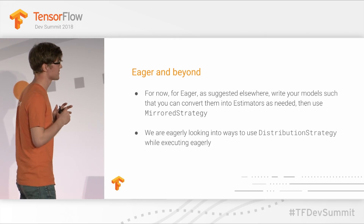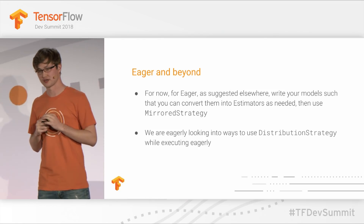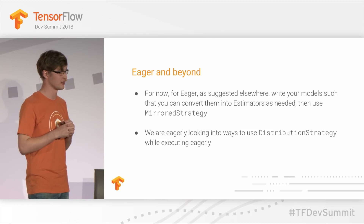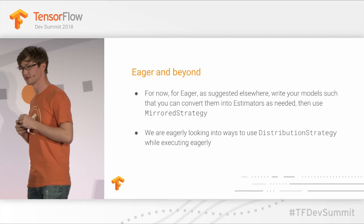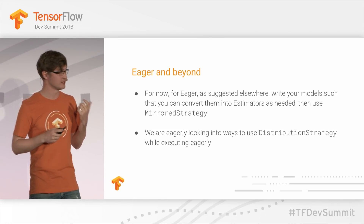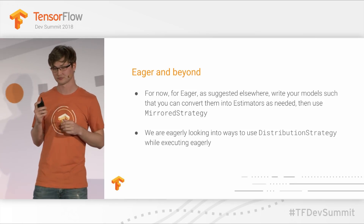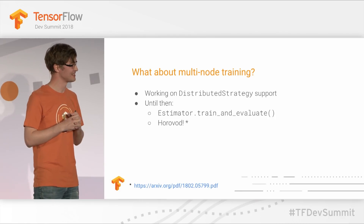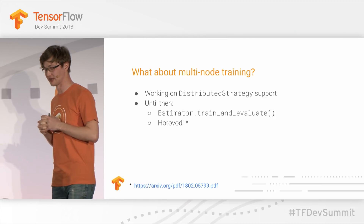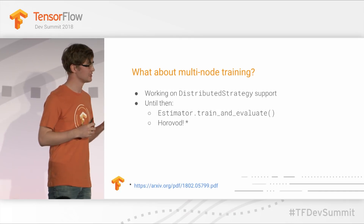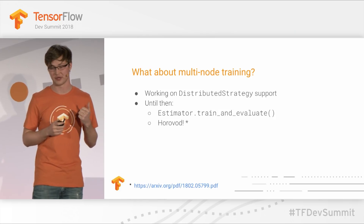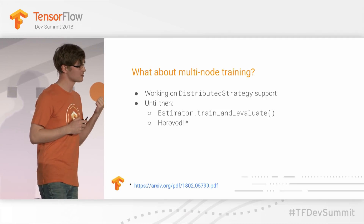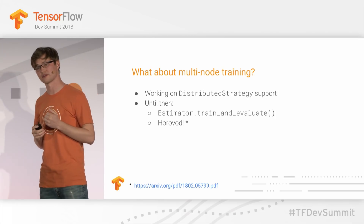Distribution Strategy also works with eager mode, though we're still fine-tuning the performance. It's a very general API that in the future will support many use cases — it's not tied to Estimator, and we're looking into better APIs built on top of it. Soon, we intend to support many kinds of distributed training: synchronous, asynchronous, multi-node, and model parallelism. Until then, for multi-node solutions, please continue using Estimator's train and evaluate, or try Horovod — an outstanding community project that also offers a multi-node solution.